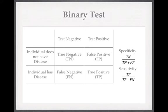Specificity. We're sat in a clinic: if this man doesn't have prostate cancer, what are the chances that he will test negative? Or to put that another way, of all of the people who do not have prostate cancer, what proportion of them will test negative with the PSA? So in the numerator we get the true negatives — those who don't have prostate cancer who test negative. And in the denominator we get all of the people who don't have prostate cancer, comprised of the true negatives and the false positives. So that's how I like to remember specificity and sensitivity.